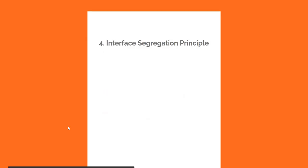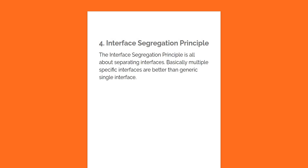The next principle is Interface Segregation. Interface Segregation is all about separating interfaces — multiple specific interfaces are better than one generic, gigantic single interface. The benefit is similar to Single Responsibility Principle: segregating interfaces gives you better chances of single responsibility. Also, if a class needs only four of five methods on an interface, it ends up with unimplemented methods and ugly workarounds like throwing exceptions. Interface Segregation is very critical.